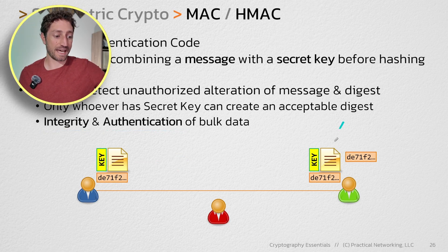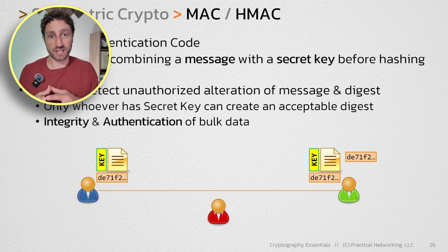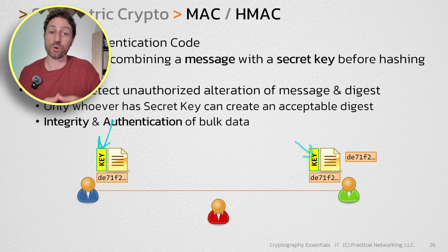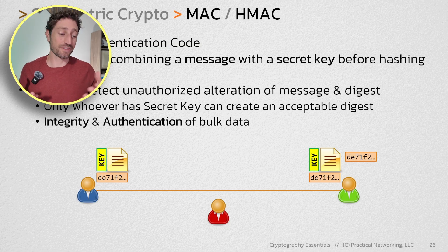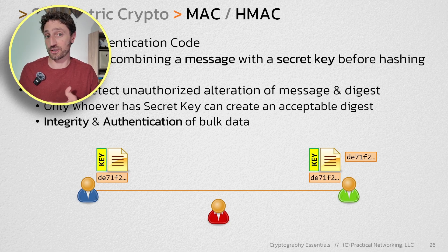We have integrity because had this message changed, the green user would have ended up with a different digest. And we have authentication because we know the only person that could have created this digest is anyone that had the same secret key, which should be only the other party in this communication. Of course, the question of how they got the same secret key to begin with is very interesting — it's sometimes called the key exchange problem, and we'll be talking about solutions to that later in the series.